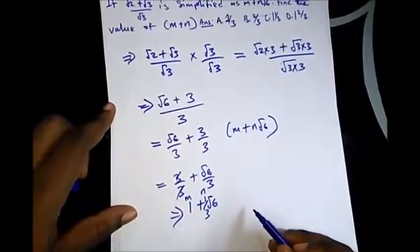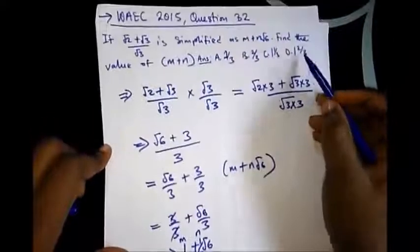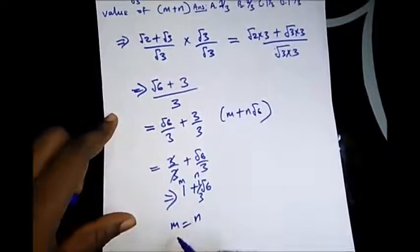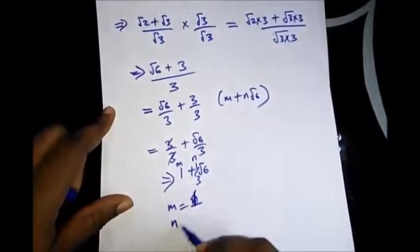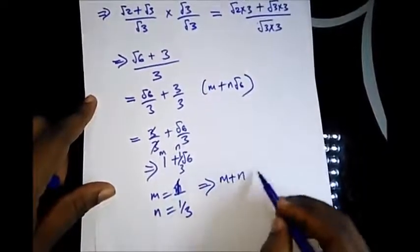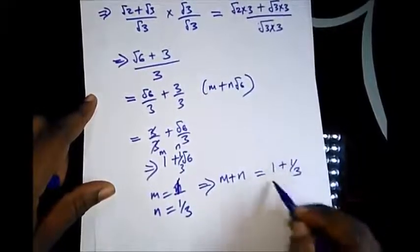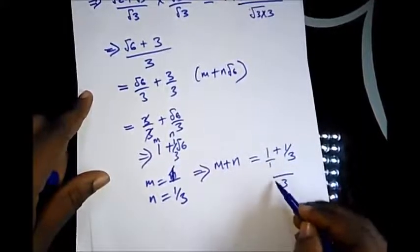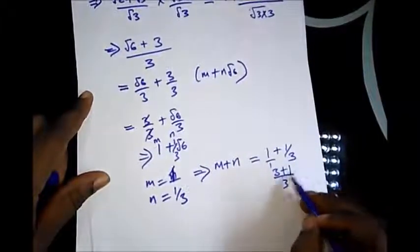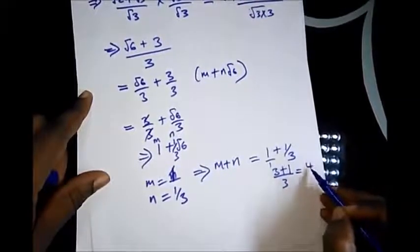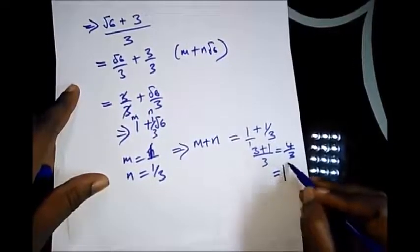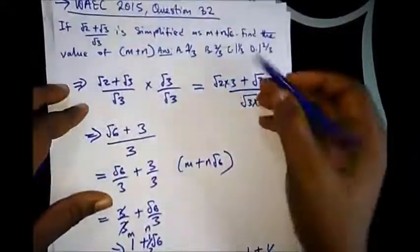This would be 1 + (1/3)√6. So definitely this is m and this is n. And the question says find the value of m + n. So from here we know that m = 1 and n = 1/3. So what's the value of m + n? It's equal to 1 + 1/3. Here what's the value? 3×1 plus 1 over 3. That's 3 + 1, that's 4 over 3. Changing this to mixed fraction we have 1⅓, and this is our answer here.